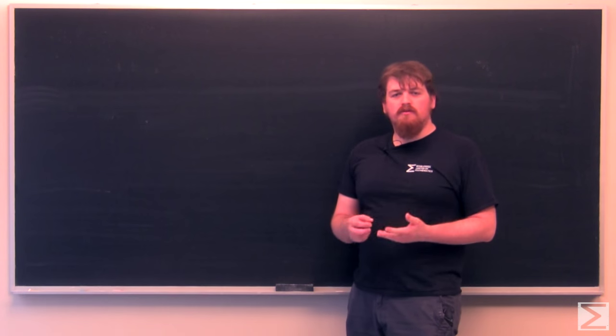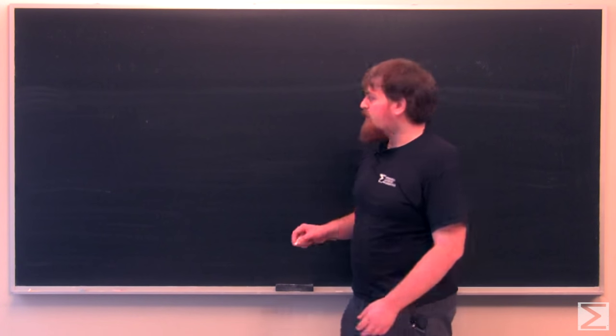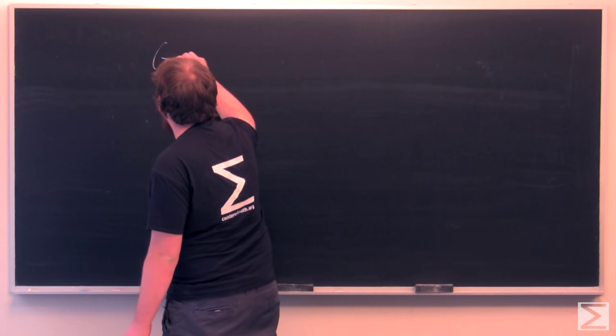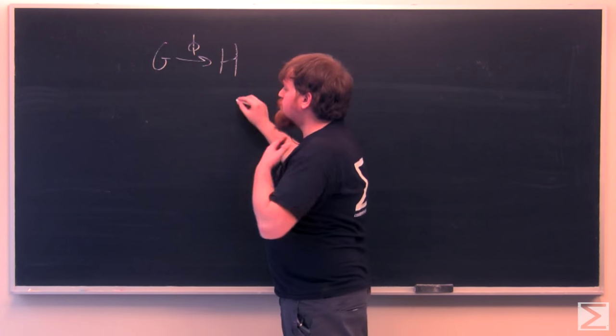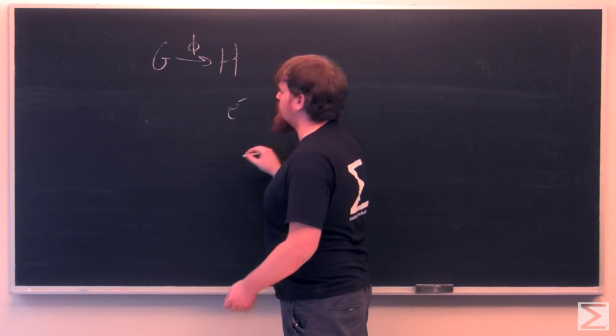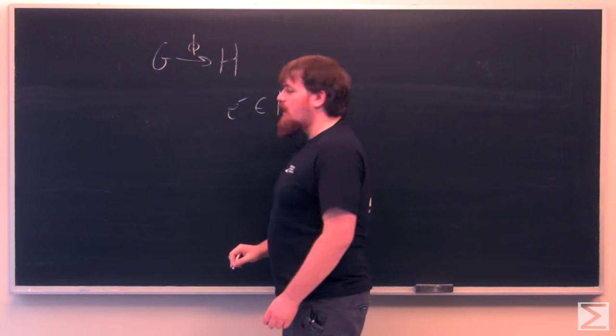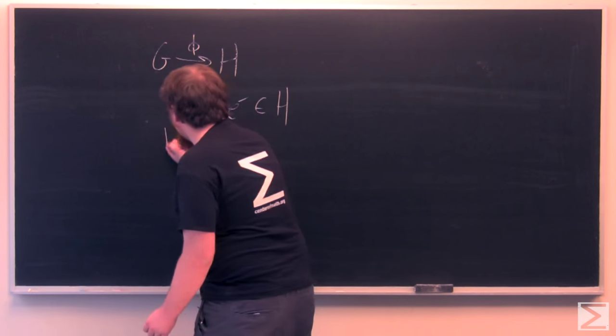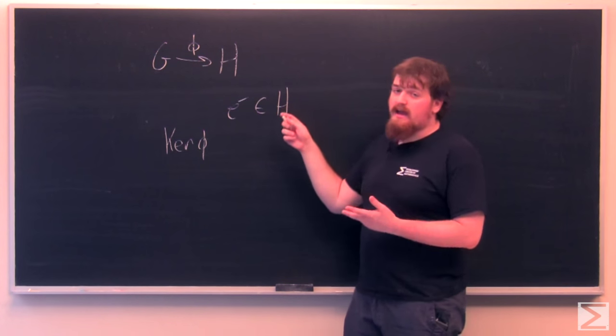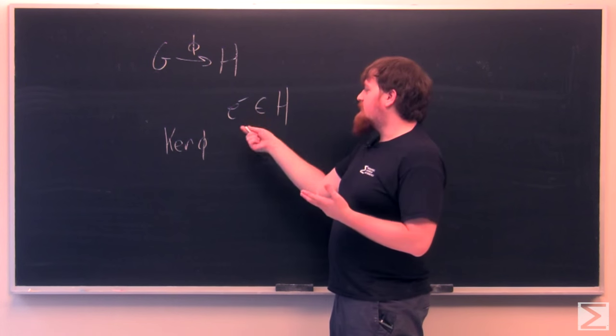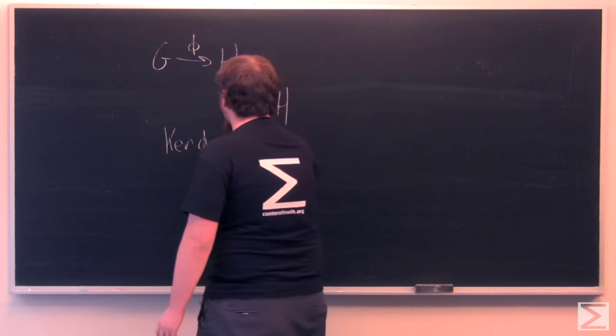One of the more important subgroups associated with any group homomorphism is called the kernel. If we have a homomorphism phi from G to H, and if H has identity element E prime instead of E, which will be in G, then the kernel written ker phi is the set of elements in G which are sent to E prime under the homomorphism phi. This is all the elements which go to the identity.